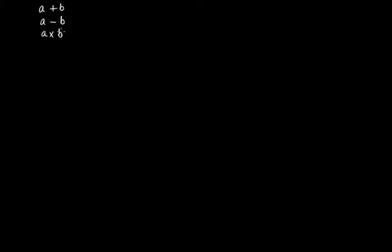If we add two integers — say a plus b — or if we subtract two integers, that is a minus b, or if we multiply two integers, that is a times b, then in all these three cases you will always get an integer. The result will always be an integer. Based on this, we can say that addition, subtraction, and multiplication of integers are closed — they follow the closure property.